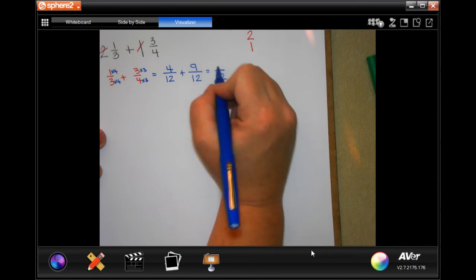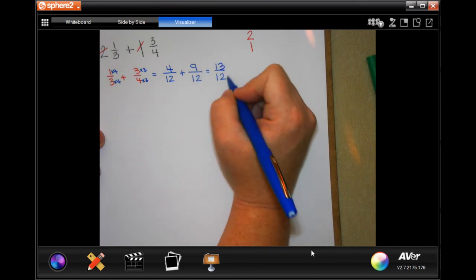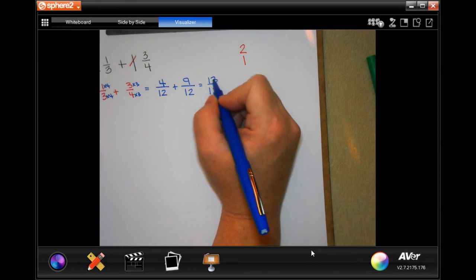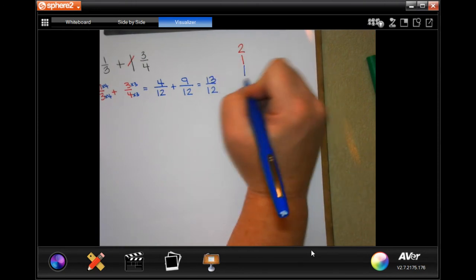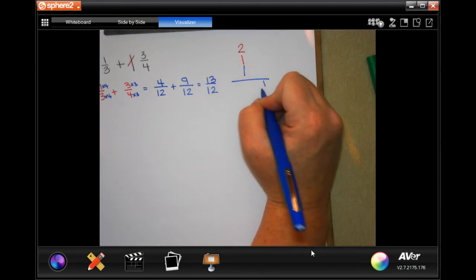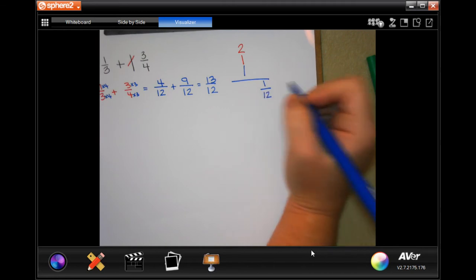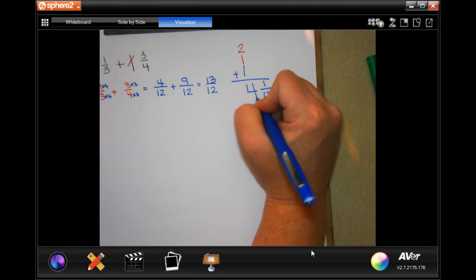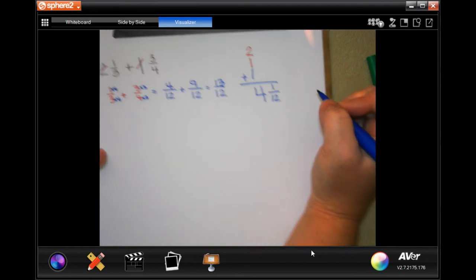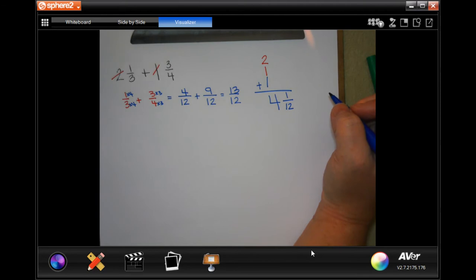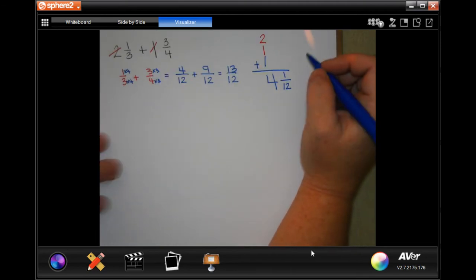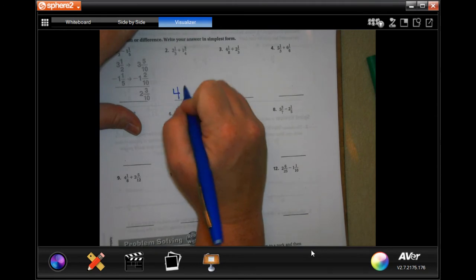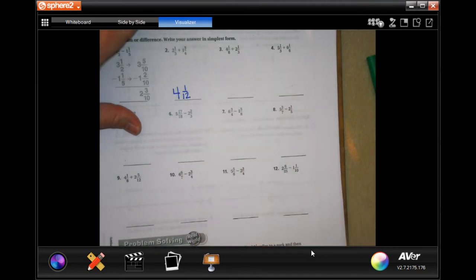So 4 plus 9 is 13. Do you have the top numbers bigger than the bottom number? We can't have that. So 12 is going to go into 13 one time. I would have 1 left over and my denominator stays the same. Now I just need to add up my whole number and I get 4. 4 and 1/12 is your answer.